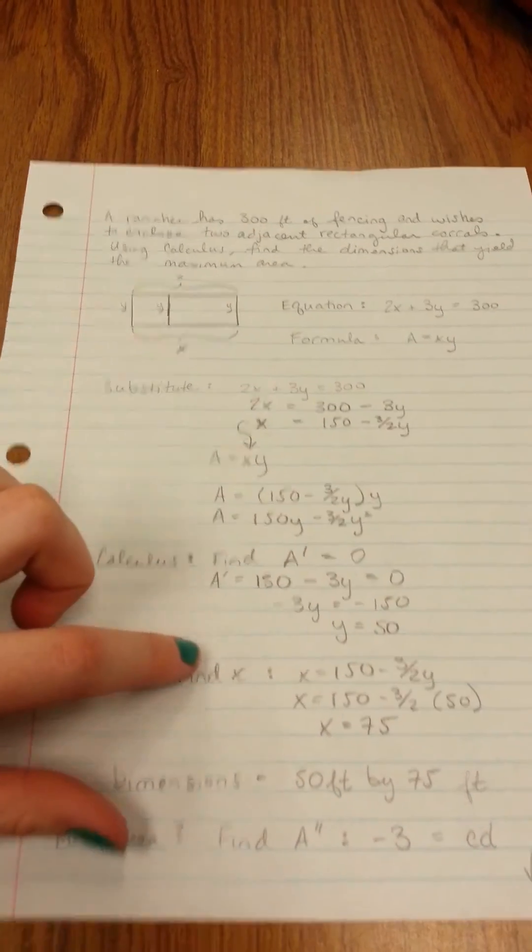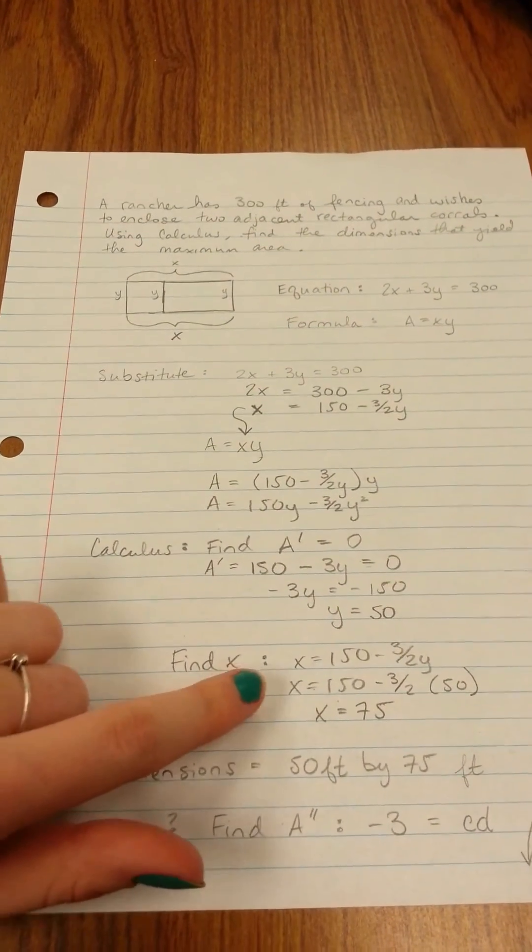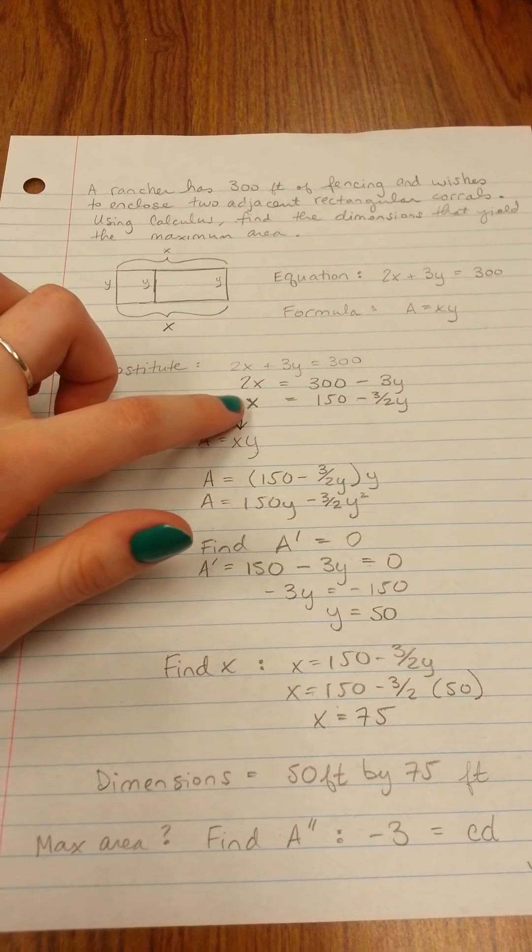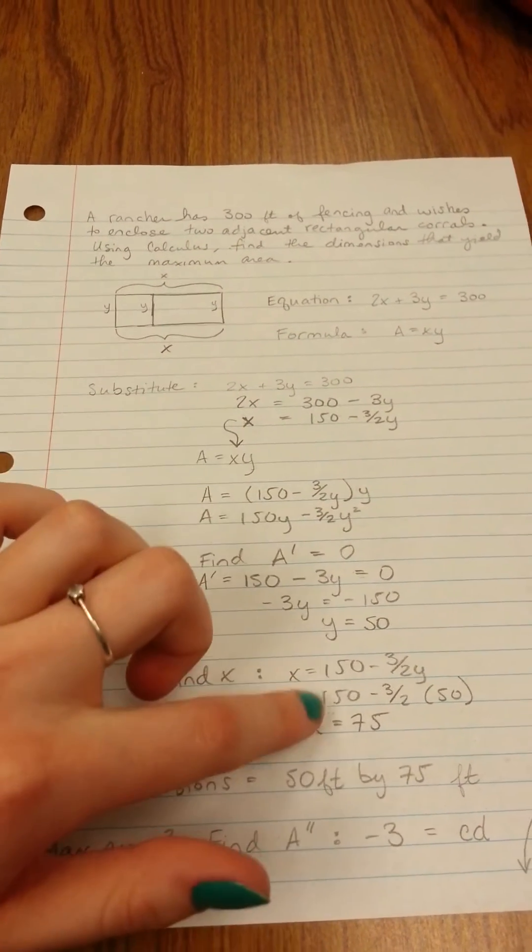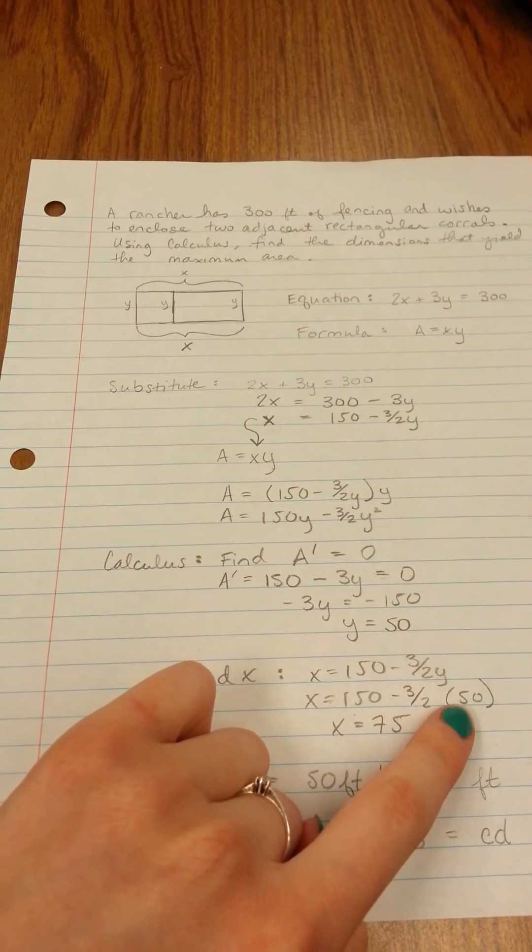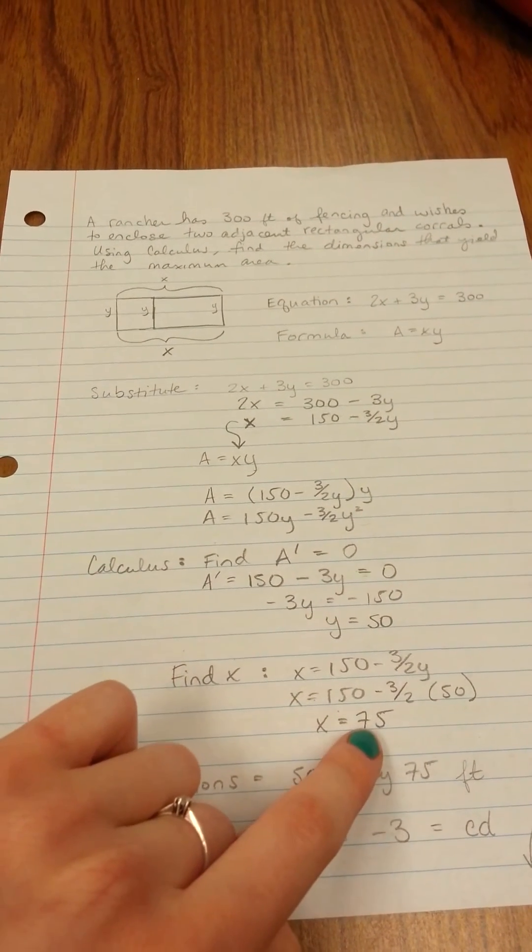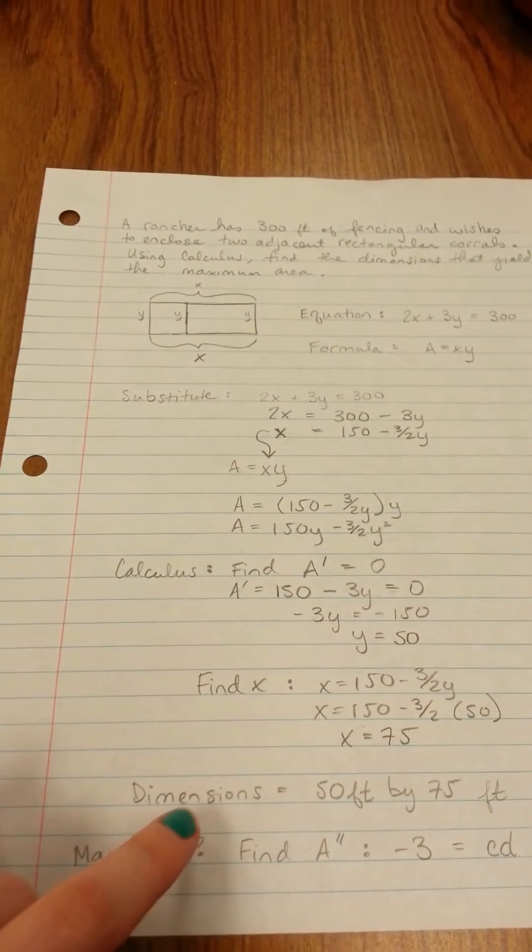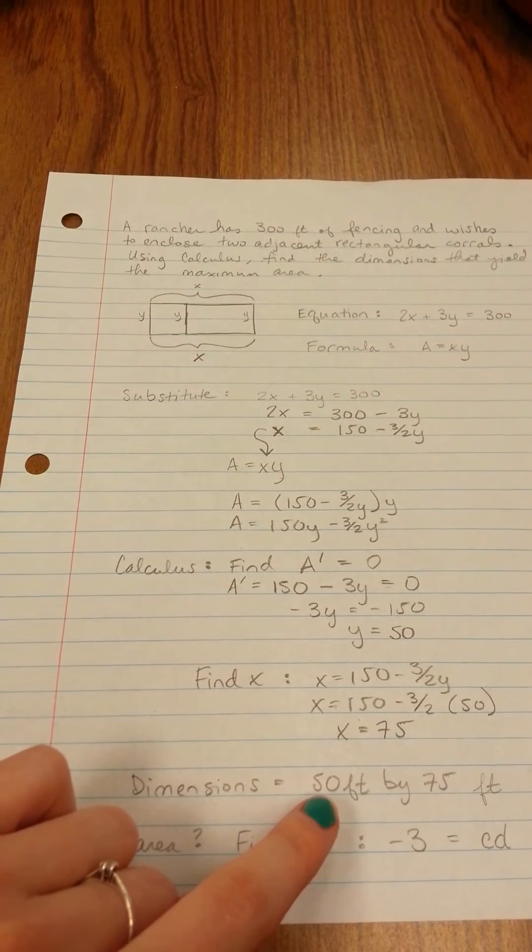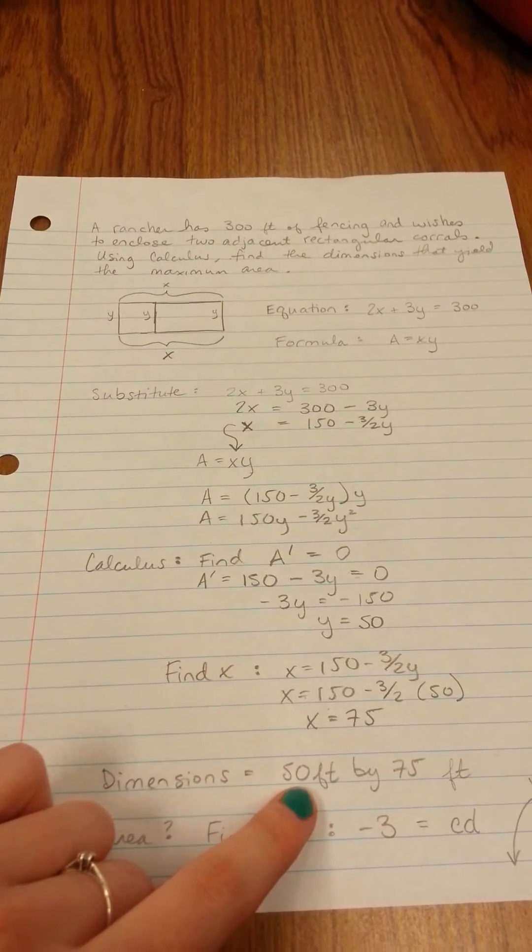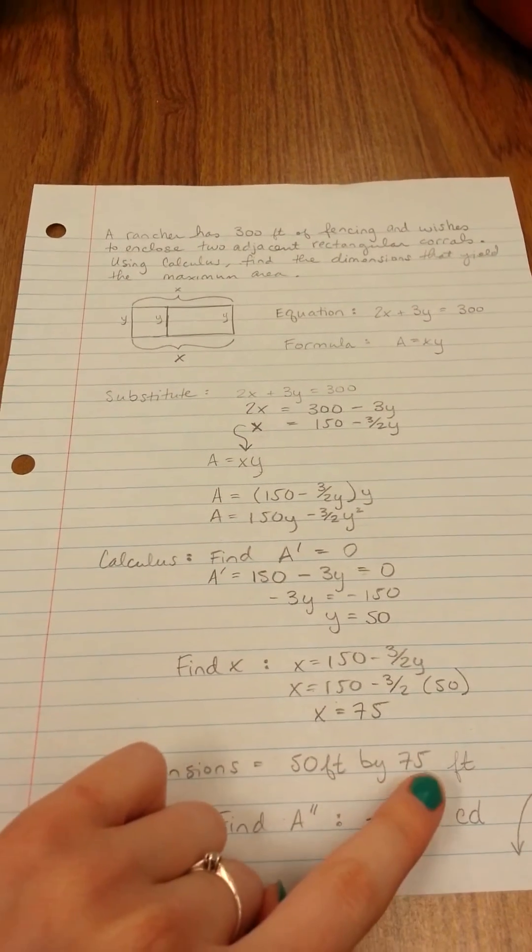And then to find our X, we just take our equation that we had up here, where X equals 150 minus three halves Y, and then we plug 50 in for Y, and we solve it to get X is 75. So we know that our dimensions for the corral, to get the maximum area, is going to be 50 feet by 75 feet.